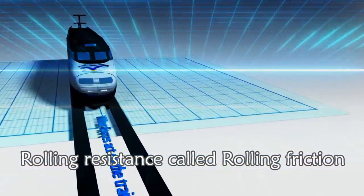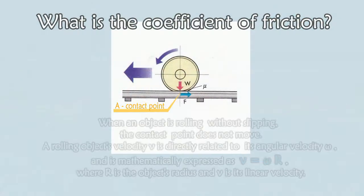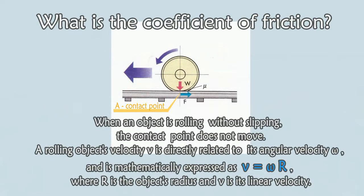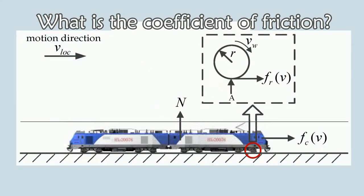The rolling friction is caused by the motion of the wheels of the train. Assume that A is a contact point between the wheel and the rail. Since the motion direction of A is opposite to that of the train, then friction occurs to prevent the motion of A.